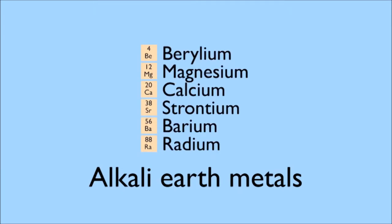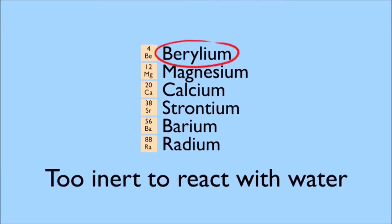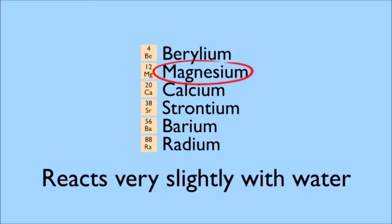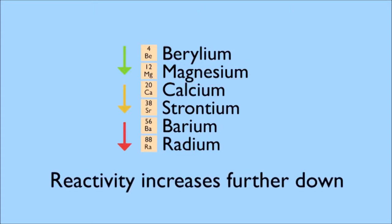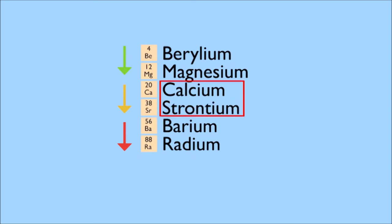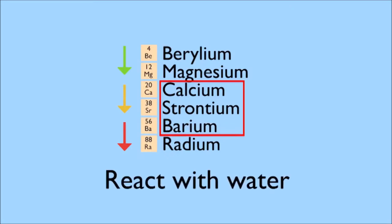Moving on to group two, the alkaline earth metals, things are a little different. The metal at the top of the group, beryllium, is too inert to react with water. Magnesium just below it reacts only very slightly, but again consider the reactivity trend—it increases going down the group. The elements below: calcium, strontium, and barium will react with water.